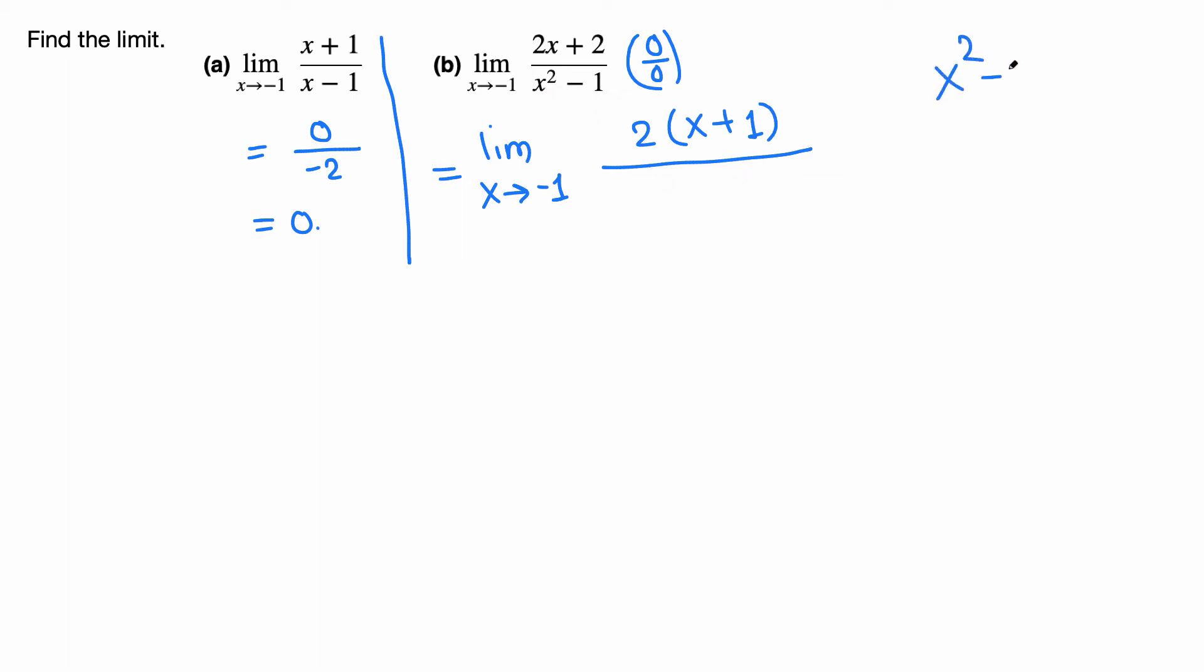On the bottom we got x squared minus 1. x squared minus 1 is 1 squared, so this is in fact a difference of 2 squares. If we factor it, it gives us (x+1)(x-1). So the bottom factors as (x+1)(x-1).